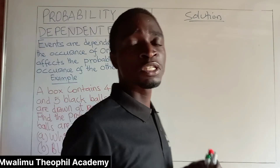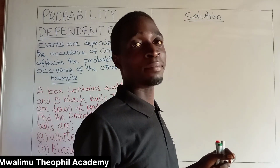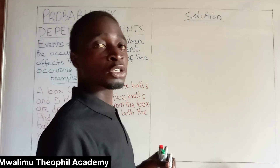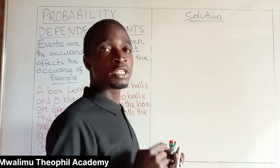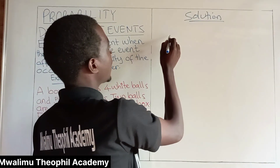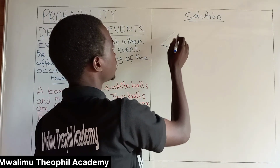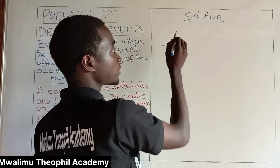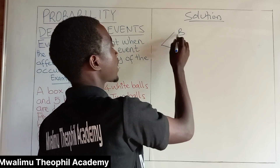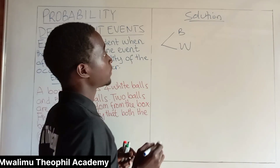I am going to solve this problem by using a T-diagram. Here we are required to draw two balls at random, so let us use a T-diagram to see the chances for drawing a first ball. A first ball can be black or white.